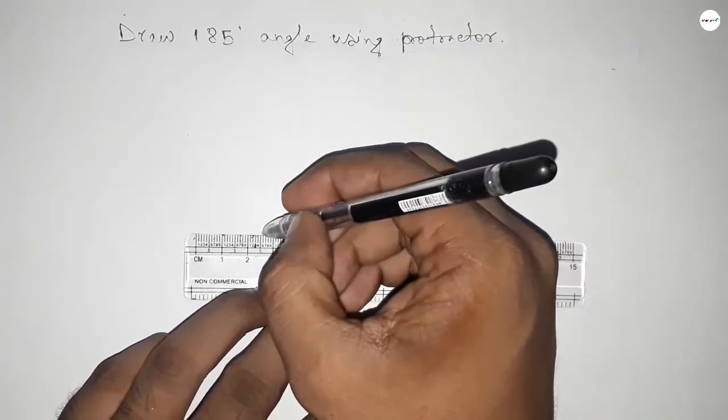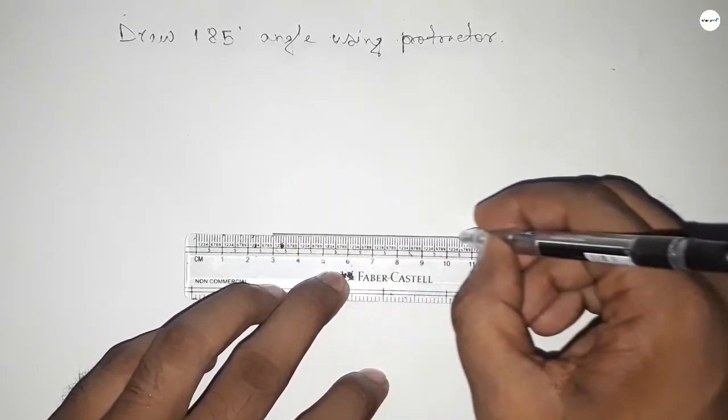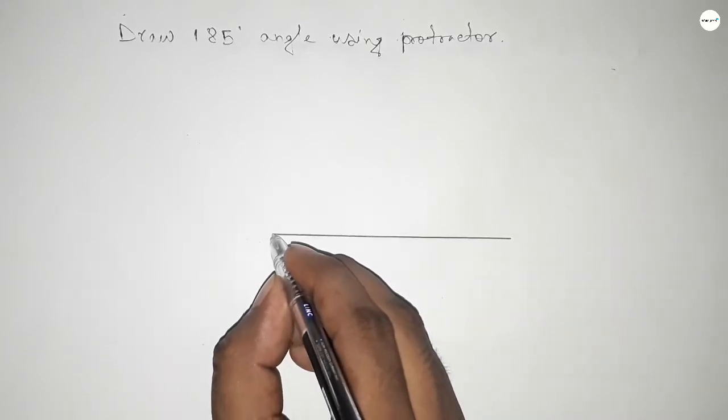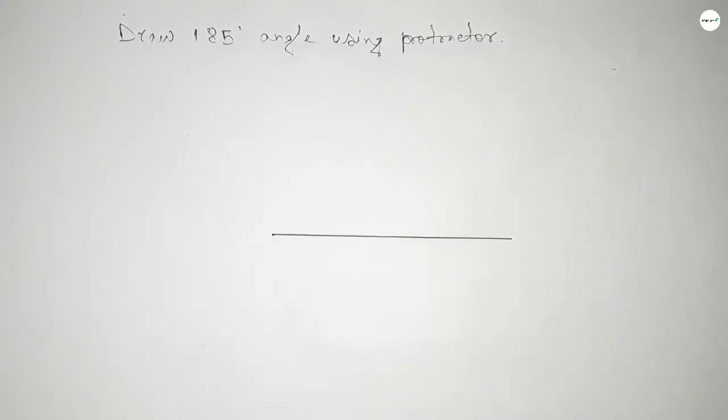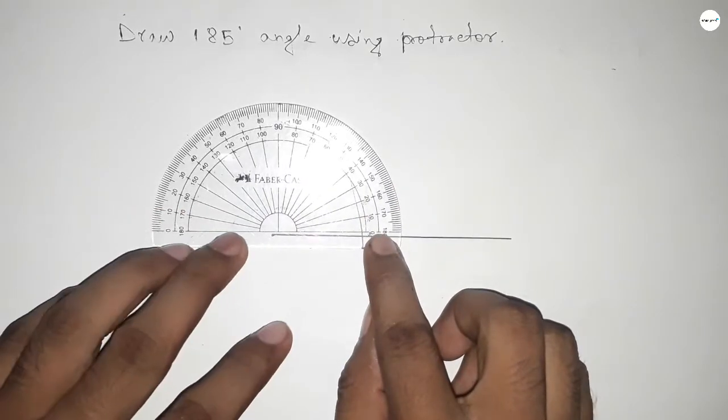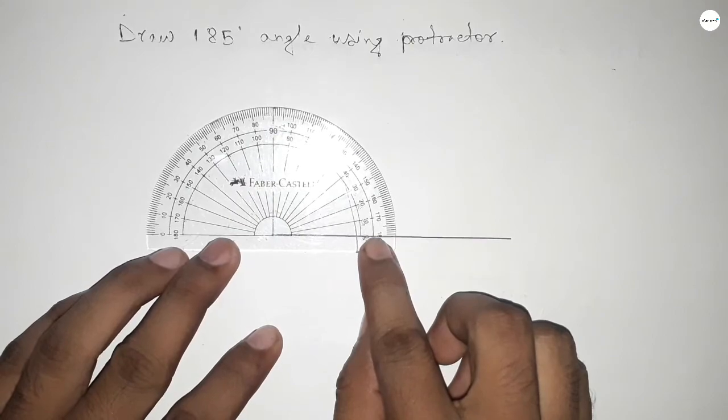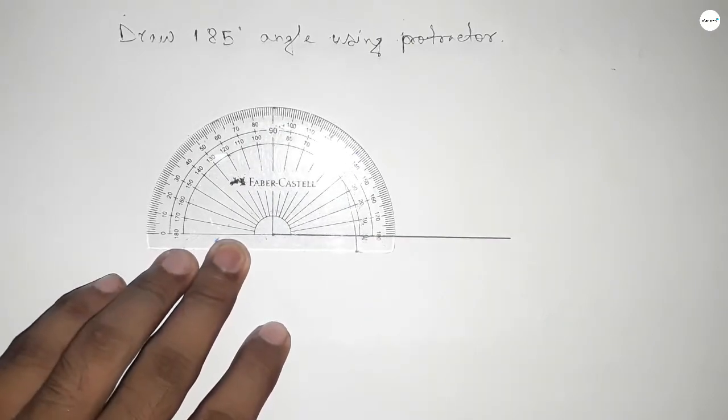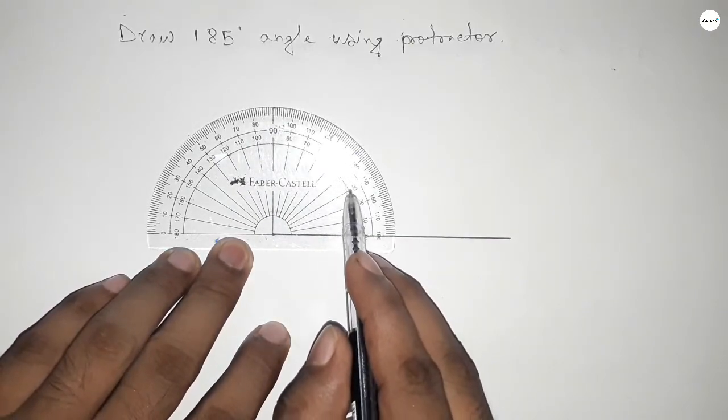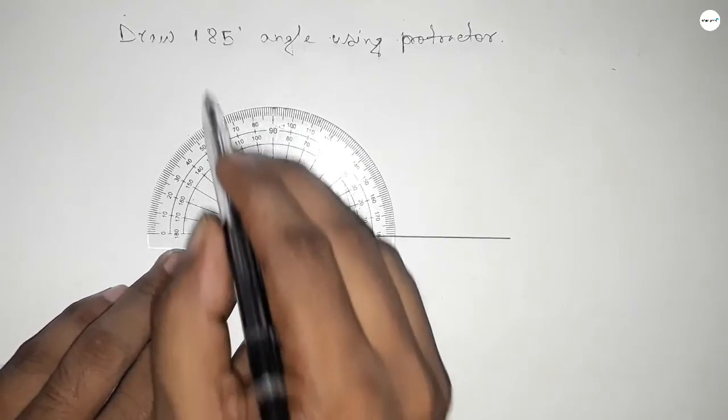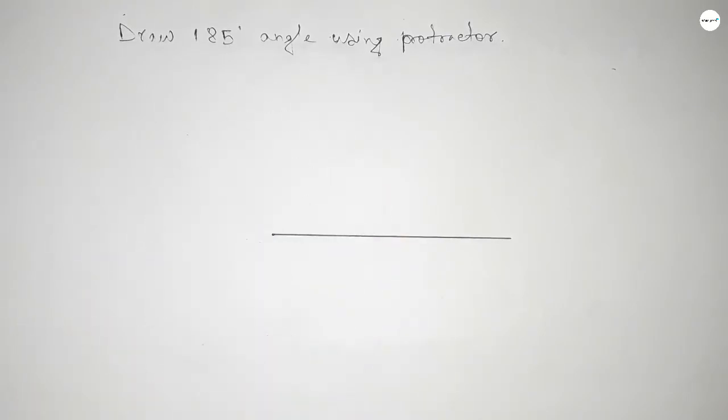Now pointing here to draw 185 degree angle. Now for 180 degree we know that this full protractor is 180 degree up to here, but we have to draw 185 degree angle.